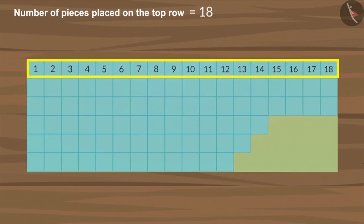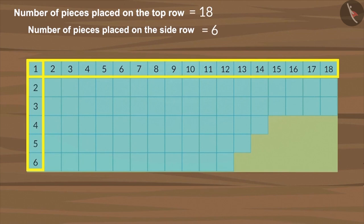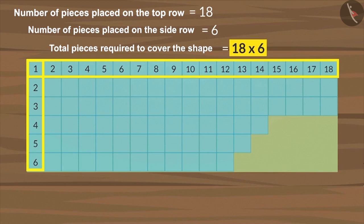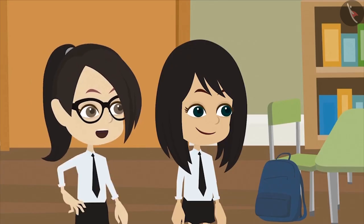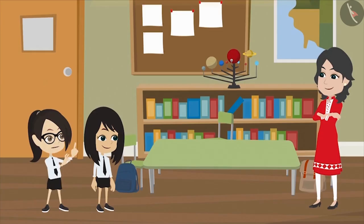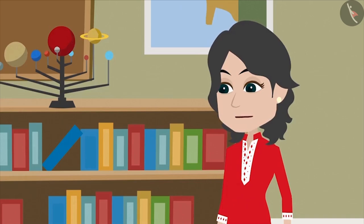Eighteen pieces are placed on the top row of the desk and six on the side. So we multiply them to identify how many pieces will be required to cover the entire desk. We get one hundred and eight on multiplying six by eighteen. So does this mean that we will require one hundred and eight pieces to cover this desk completely? Yes.